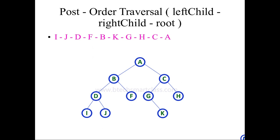Once you visit G, you have to visit the right child of C. The right child of C is H. So H has been visited. Once H has been visited, the root node of H will be marked as visited. Then you have to visit C. Once you visit C, the root node of C will be visited. It is A.